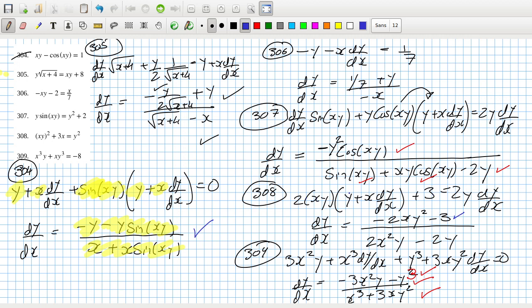The 3 should be negative. 2xy squared on the other side should be negative, and 2x squared y is positive, and then minus 2y. I think that's all right.